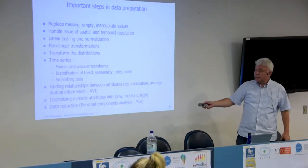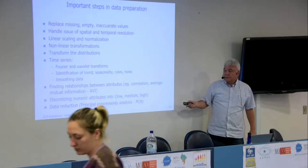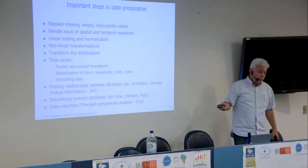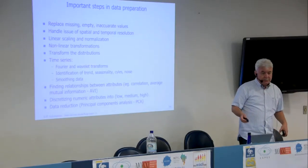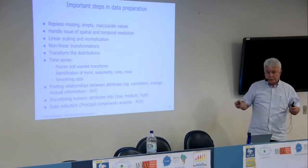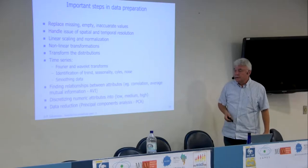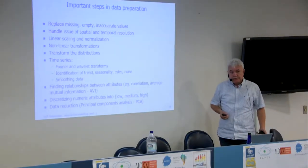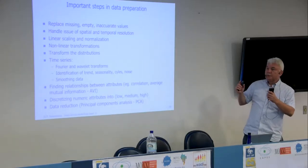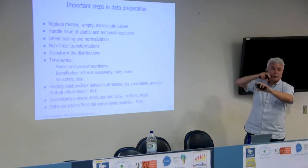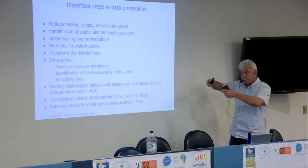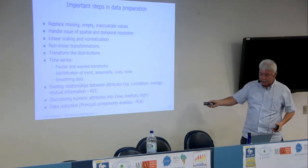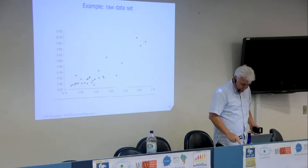One method to reduce the number of inputs is principal component analysis. You linearly combine some inputs into a smaller number of components, making your model simpler with fewer inputs. In fact, you have two models: one that does a linear combination of inputs, and then another model that processes the result. Not often done, but sometimes useful.